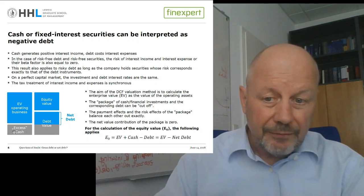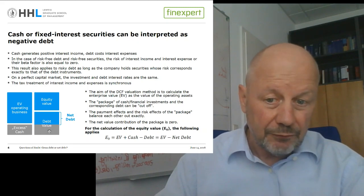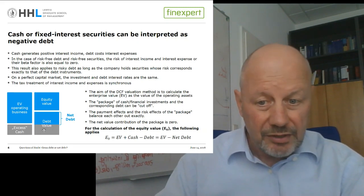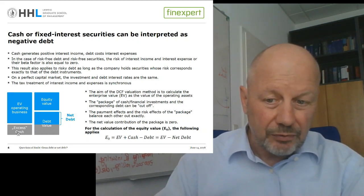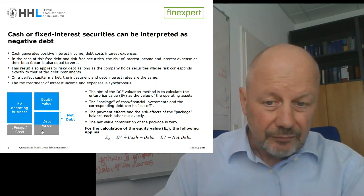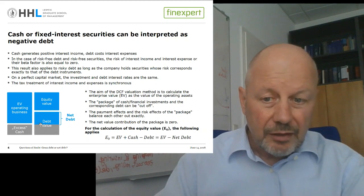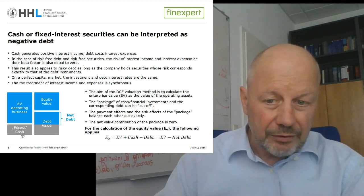On a perfect capital market, the interest income generated by cash is equal to the interest expense paid for the corresponding debt, so this nets out to zero. And finally, even the tax treatment of the two components corresponds: if we take corporate taxes into account, we pay taxes on our interest income, but the interest expense is tax deductible. So in every respect, these two — the gray shaded area — net out to zero. And so we don't have to care for it in the corporate valuation of our operating business.